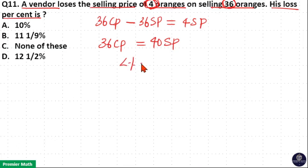Now loss percentage is equal to loss divided by total cost into 100. Loss here is selling price of 4 oranges from this total cost, that is selling price of 40 oranges. Which is equal to 4 by 40 into 100, which is 10 percent. So option A is your answer.